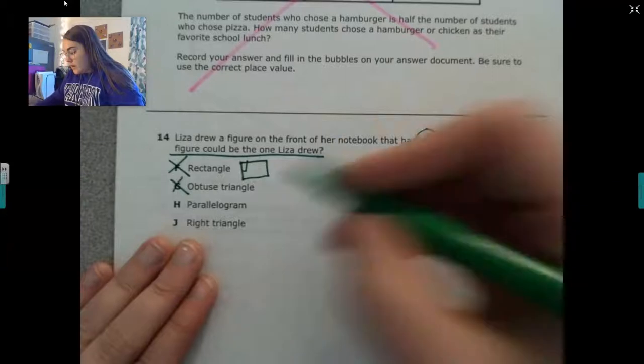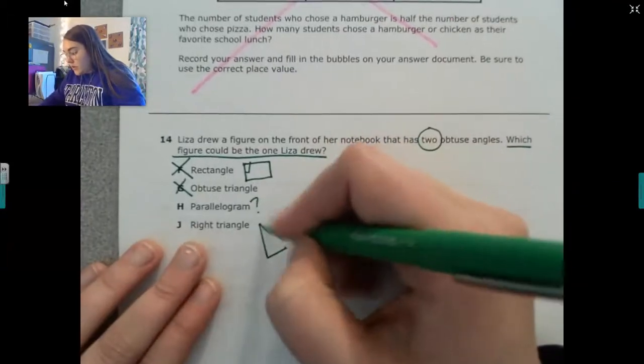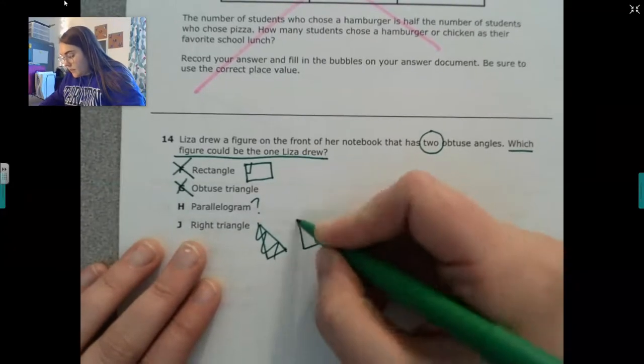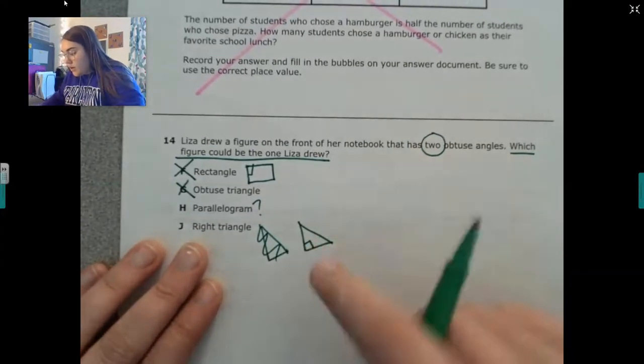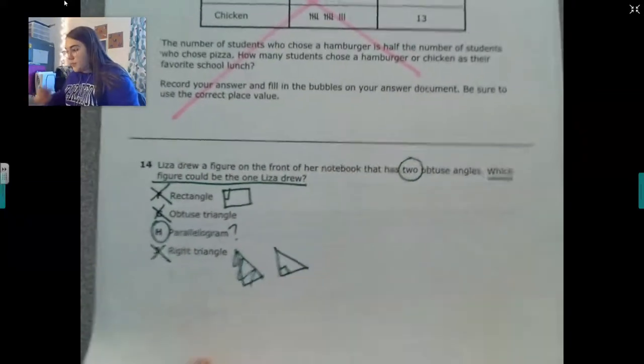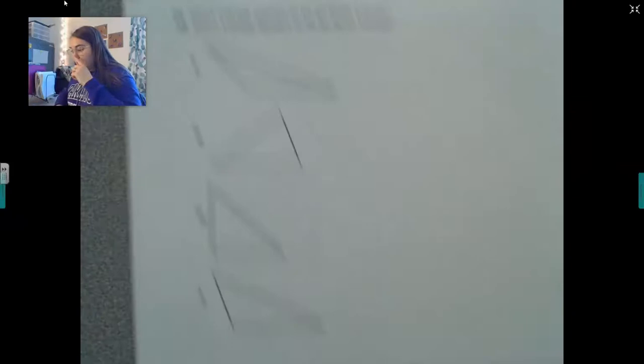In a right triangle. And a right triangle can only have, oh that's not even a right triangle. A right triangle only has one right angle. So it has to be H. So like I said, just go through that flow chart in your head.